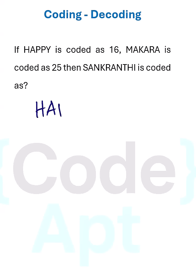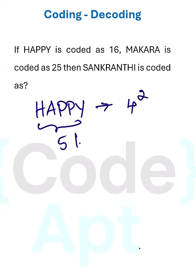A lot of people may go for forward coding like A=1, B=2, C=3, or maybe reverse coding where Z=1, Y=2 and so on. But here 16 is a perfect square — it is 4 squared. The number of letters in HAPI is 5, so 5 letters gives us 4 squared.